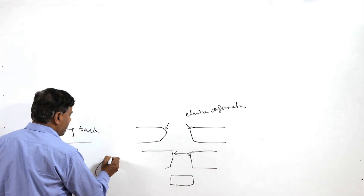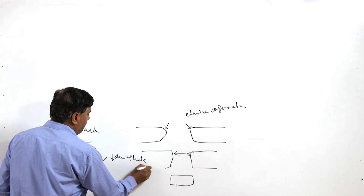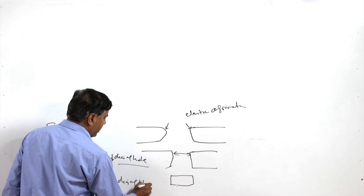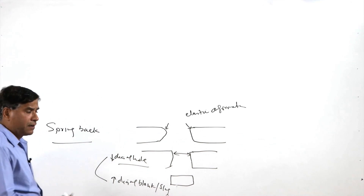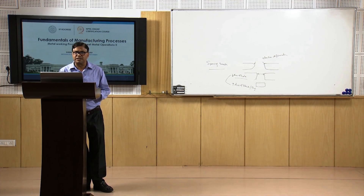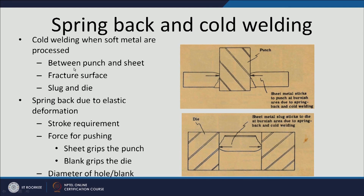The spring back effect has two effects: reduction in the diameter of the hole and increase in the diameter of the blank or slug. Cold welding, when soft metals are processed, leads to joining between the punch and the sheet or welding of the fracture surfaces of the slug and die. The spring back effect is due to elastic deformation; due to spring back, the slug may remain attached to the die, requiring more stroke to clear it. Force for pushing is also needed, and it also affects the die and hole diameter. The hole diameter due to spring back gets reduced while the diameter of the blank is increased.